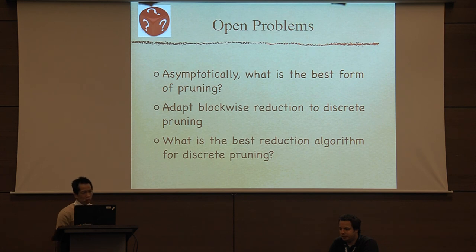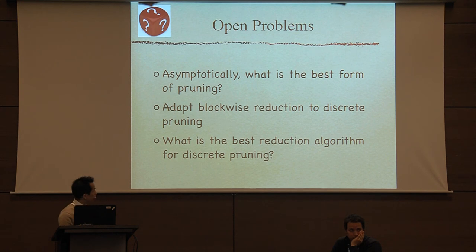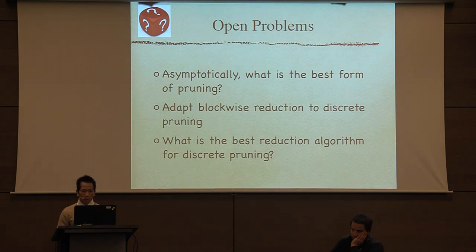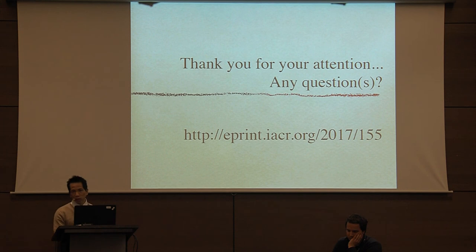There are interesting open problems. Asymptotically, what is the best form of pruning? Now we can do concrete comparisons for fixed parameters, but asymptotically — is it cylinder pruning, discrete pruning, or something different, maybe a mix? It's also clear that we need to adapt blockwise reduction to discrete pruning, because discrete pruning, unlike cylinder pruning, can tackle very large blocks. The big question is: what is the best reduction algorithm for discrete pruning? Thank you for your attention.